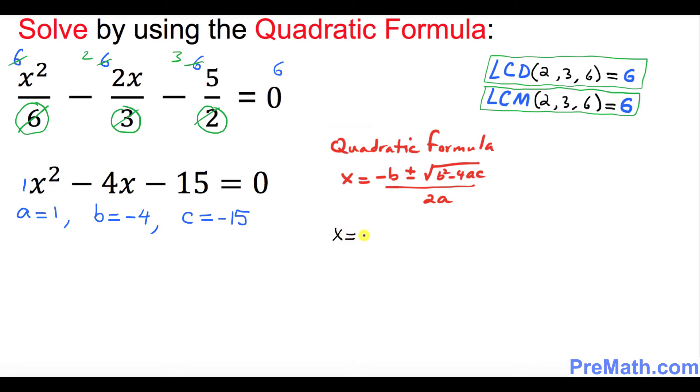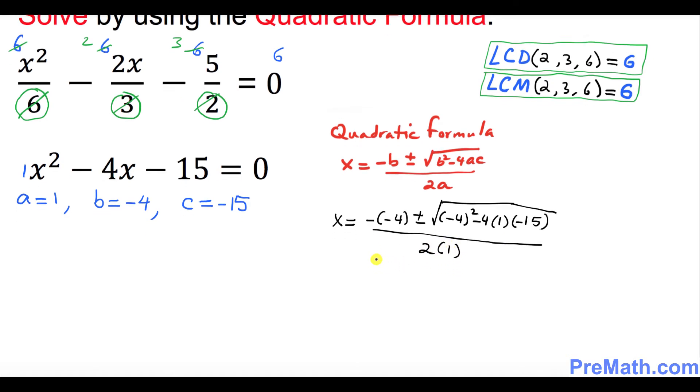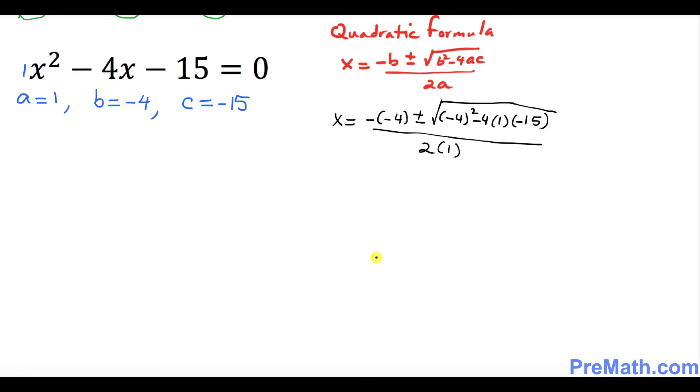So x is going to be equal to minus, and then b is negative 4, plus or minus. B squared is going to be negative 4 squared minus 4 times a is 1, c is negative 15. Everything is divided by 2 times 1.